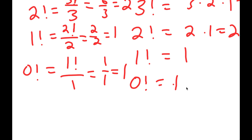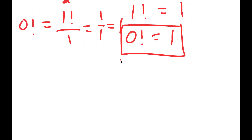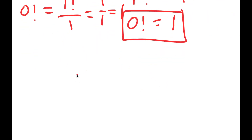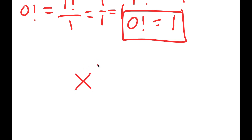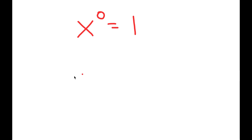That's how we get 0 factorial equals 1. Notice how this doesn't just prove that 0 factorial is equal to 1 — this is also the reason why any number to the power of 0 is equal to 1. You could just trace backwards and find out why.